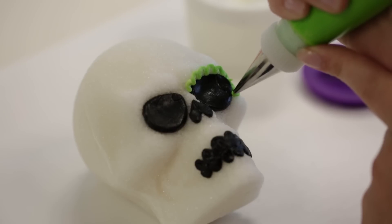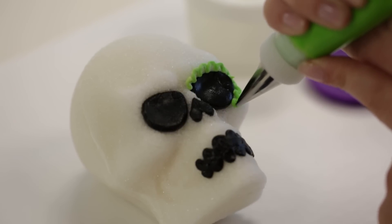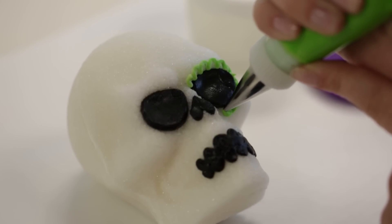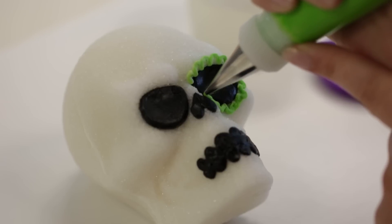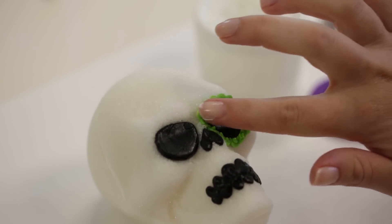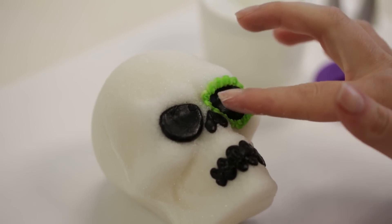Let's add some color. Use tips 4 and 10 with different colored icings to add elongated bead flowers, dots, and scrolls to the skull. Gently smooth out the icing as needed with fingers dipped in cornstarch.